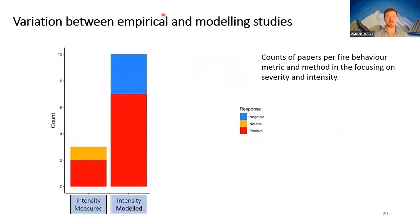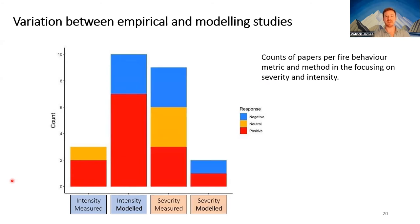We found some interesting variation between empirical and modeling studies. Looking at fire intensity, empirical studies found mostly neutral responses while modeling studies found many positive results along with a handful of negatives. Looking at severity, it was split among all three, and modeled severity found only negative or positive results. The modeling-empirical divide doesn't seem fully borne out, but there are differences related to scaling between empirical landscape-level studies and the scale at which models are operating.